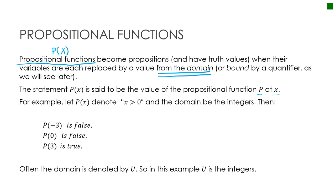For example, let p of x denote 'x is greater than 0' and let the domain be the integers. I couldn't use p of 2.5 since 2.5 is not an integer. p of negative 3 means 'negative 3 is greater than 0,' which is false. p of 0 means '0 is greater than 0,' which is false. p of 3 means '3 is greater than 0,' which is true.